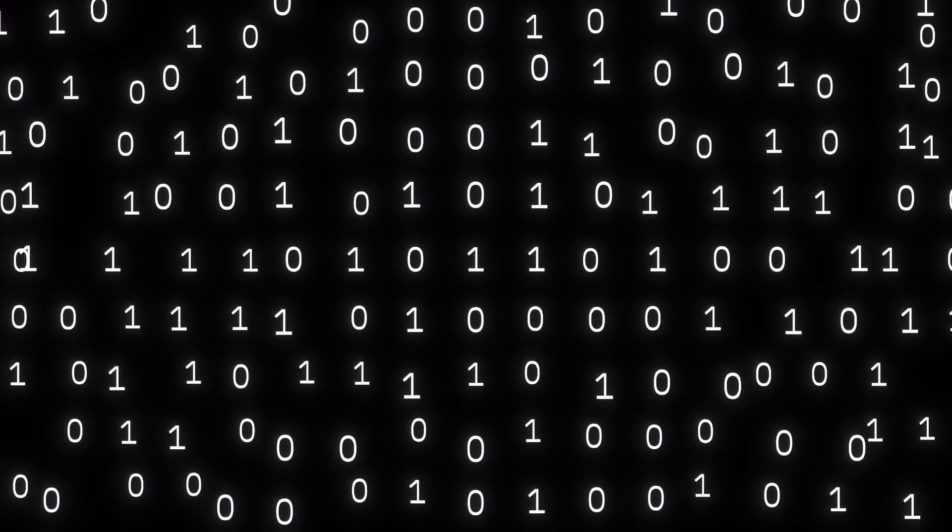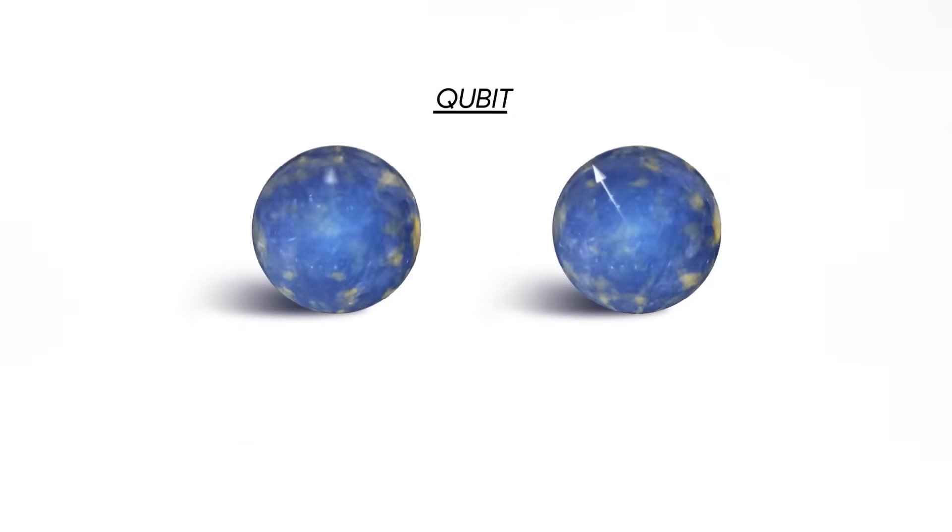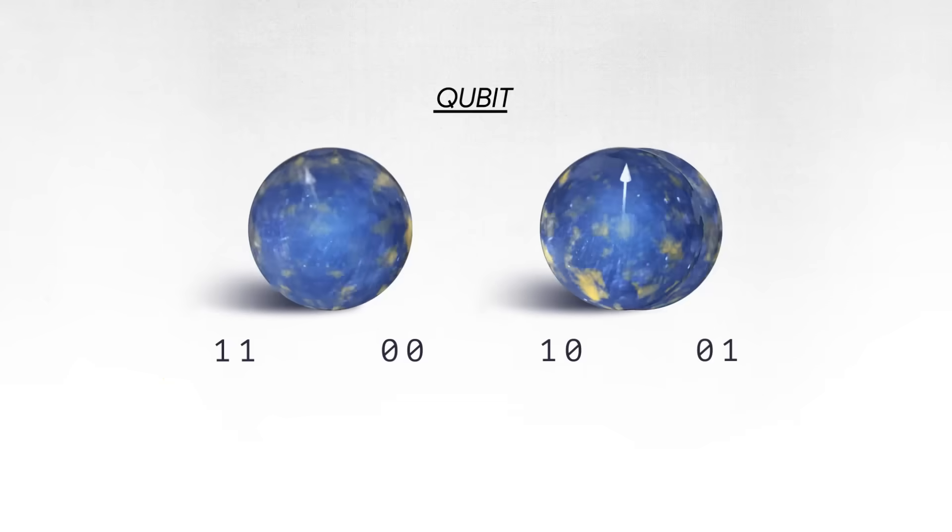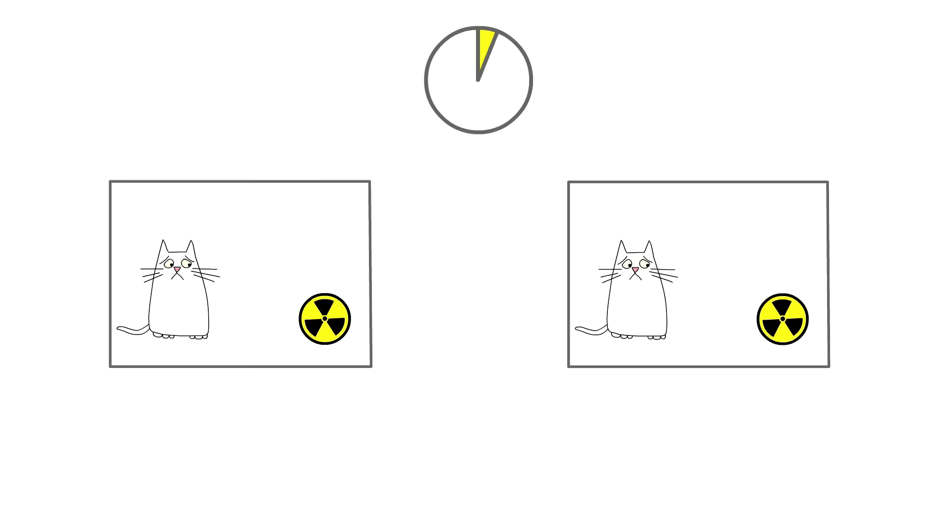Unlike classical bits, which are strictly zero or one, qubits can exist in a state of superposition, meaning they can be both zero and one simultaneously. Think of Schrodinger's cat, which is both alive and dead until observed.